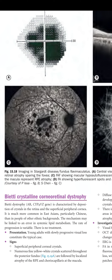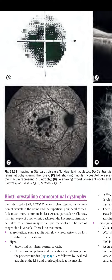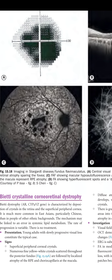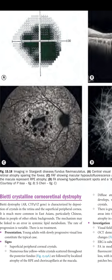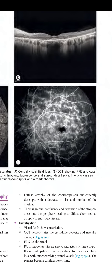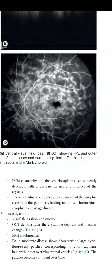Presentation is usually in young adults with slowly progressive visual loss. Signs include superficial peripheral corneal crystals and numerous fine yellow-white crystals scattered throughout the posterior fundus, followed by localized atrophy of the RPE and choriocapillaris at the macula.